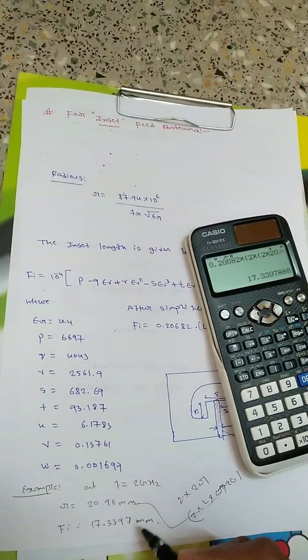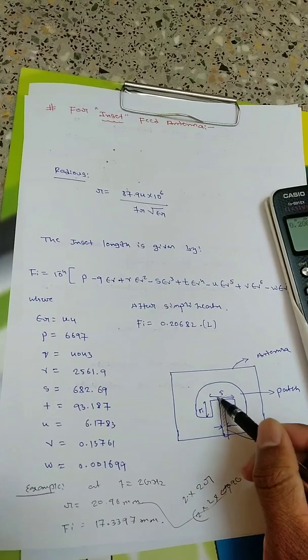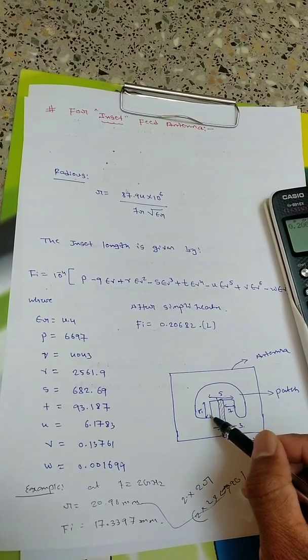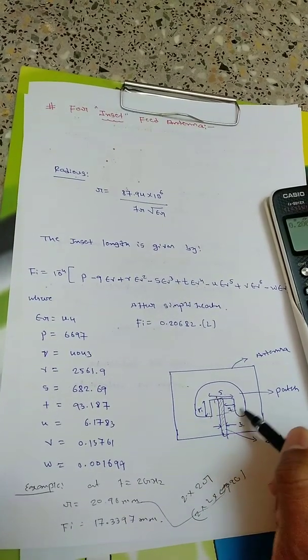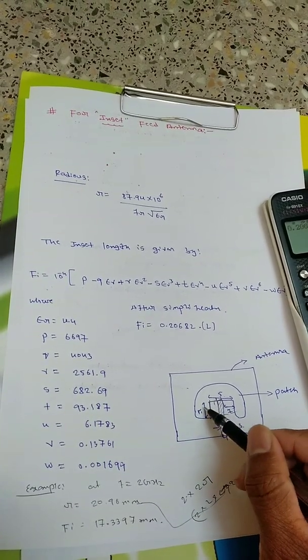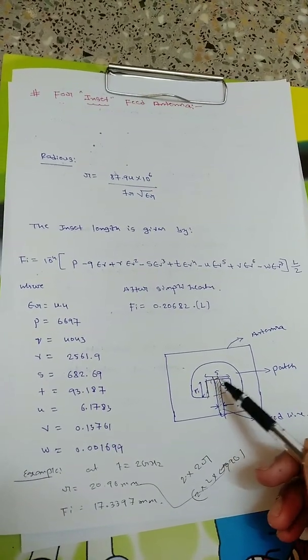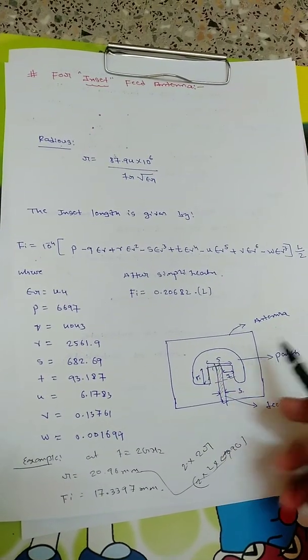17.339 mm as the insert length. So it will be inserted from here to here, 17.339. This distance of 5 is calculated. By this we will have good impedance matching and we will be getting high return losses.